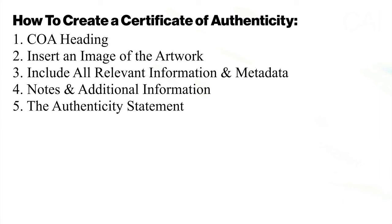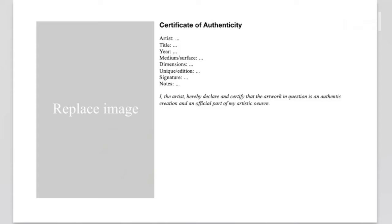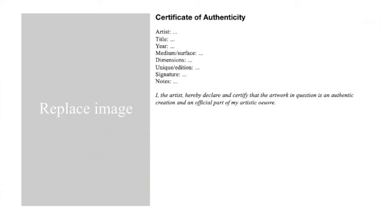Up next, step five: the authenticity statement. Make sure to include a statement in which you formally declare that the artwork is an official part of your oeuvre. Feel free to copy and paste the authenticity statement from our CHI template: 'I, the artist, hereby declare and certify that the artwork in question is an authentic creation and an official part of my artistic oeuvre.'